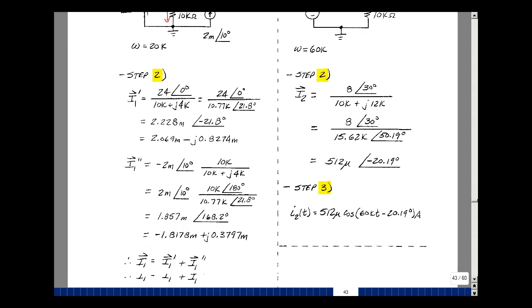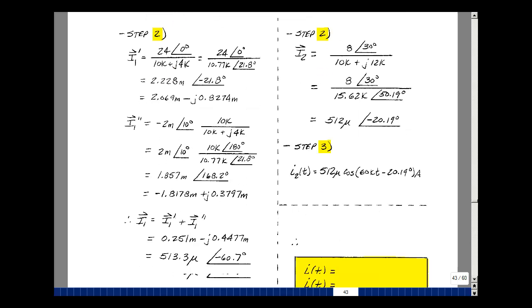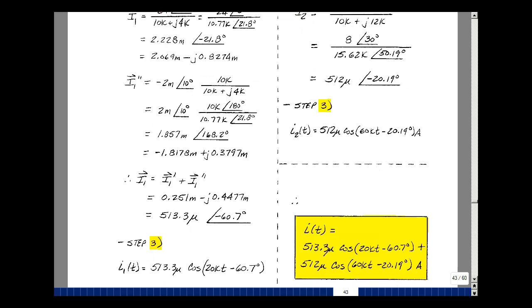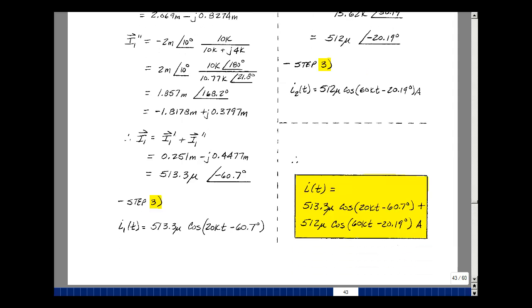That in the time domain, just putting the cosine of omega t between the two. Now we've got omega of 60 kiloradians per second. And again, the units here are amps. Do our superposition in the time domain by adding those two results. This is an example using sources of different frequencies.